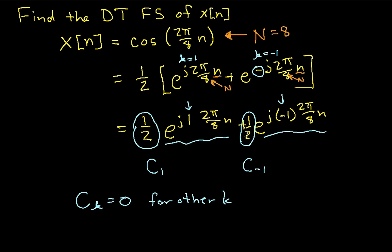The last thing to address is that if c of minus 1 seems problematic: since the Fourier series coefficients are periodic with period N — which in this case is 8 — c of minus 1 is the same as c of 7. So if you don't want negative indices for the Fourier series coefficients, you can call this c7. It's left as an exercise to show that e to the j times minus 1 times 2 pi over 8 n is the same as e to the j times 7 times 2 pi over 8 n.